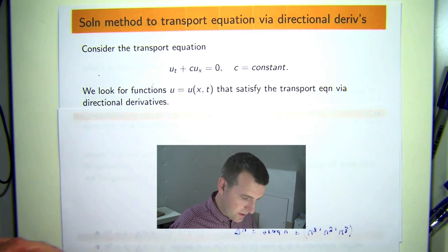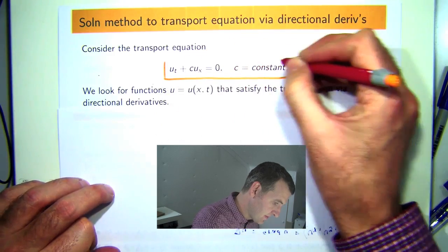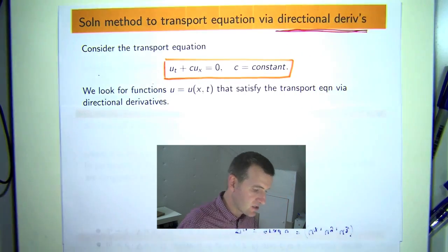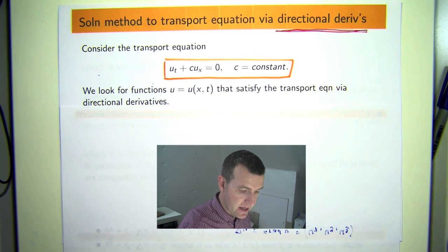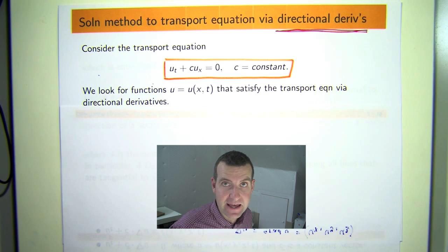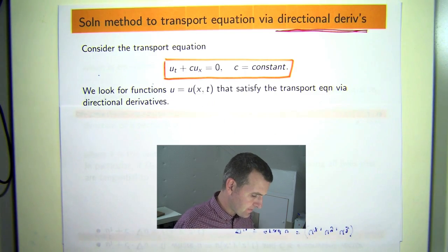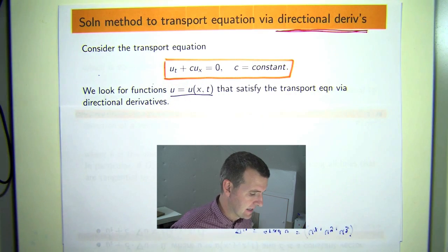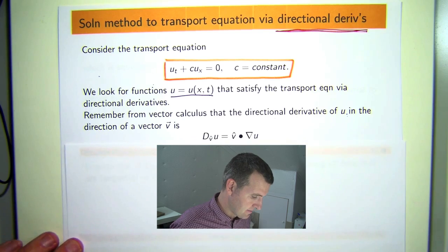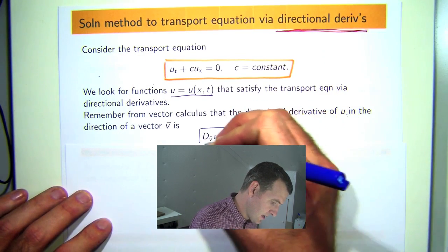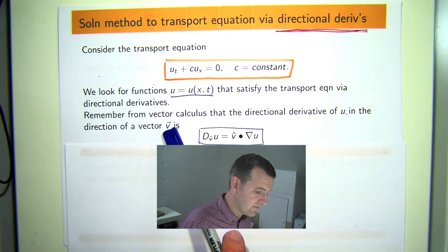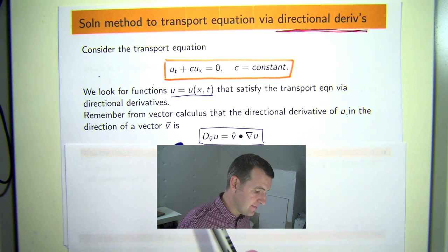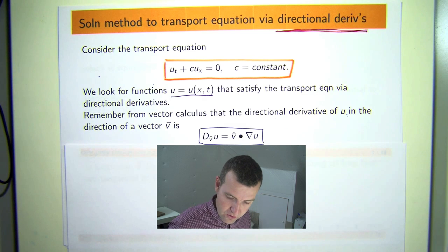Now in particular we are going to look to solve this basic form function via an application of directional derivatives. Now directional derivatives, just to refresh everyone's memory, are seen in a third course in calculus when you start looking at vector calculus. And we look for functions of two variables whose partial derivatives satisfy the given PDE. Now, like I said before, the directional derivative of u in a direction of a given vector v is denoted by this and it's just the dot product of a unit vector in the direction of v with the gradient of u.